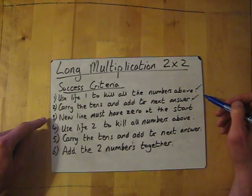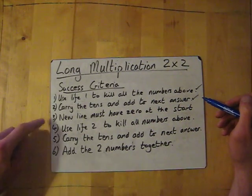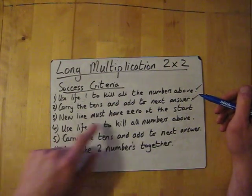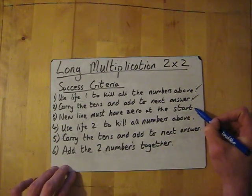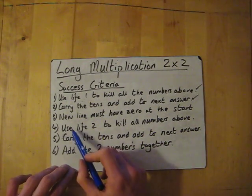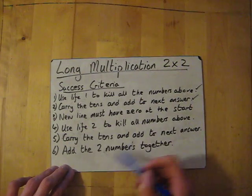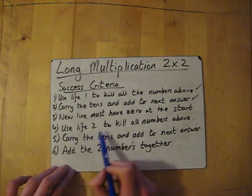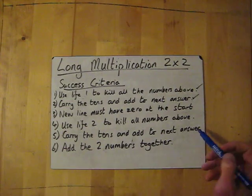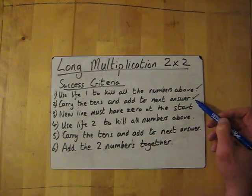Now this is where it changes slightly. What happens is you must use a new line after you've used your first life, and the new line must have a zero at the start. And then basically all you do is repeat one and two only with the second number. So you use life two to kill all the numbers above, and then carry the tens and add to the next answer, which is similar to number two.